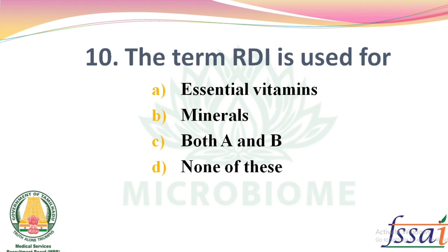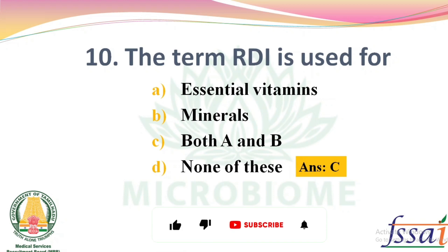The term RDA is used for — Options: Essential Vitamins, Minerals, both A and B, none of these. The right answer: Option C, both A and B, that is Essential Vitamins and Minerals.